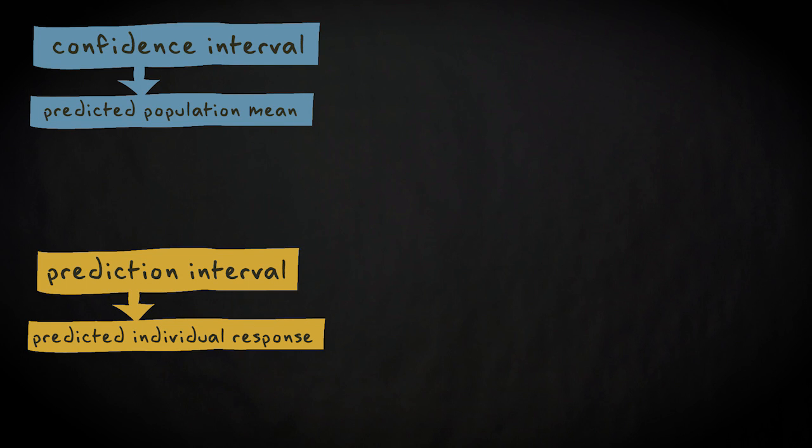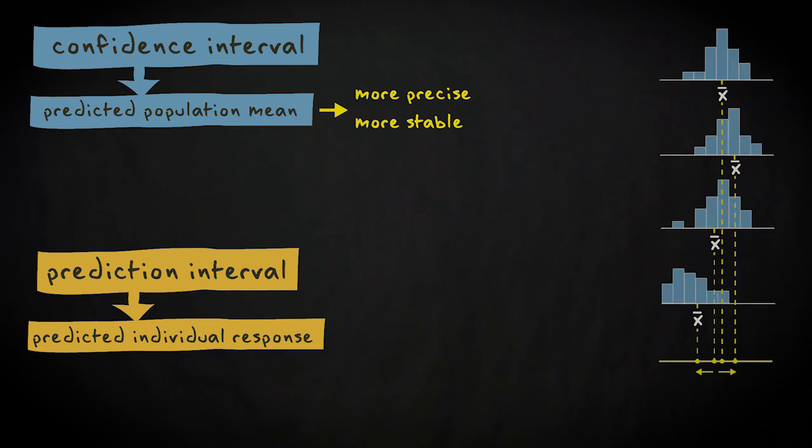Why is there a difference? Well, estimating a mean will be more precise. A group mean is more stable than individual responses. If we draw a sample repeatedly and calculate the mean, extreme scores will generally be offset by less extreme scores, stabilizing the mean.